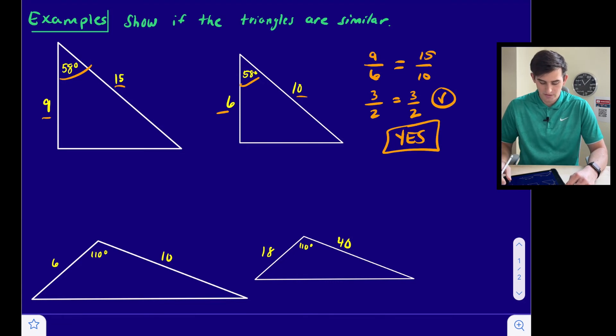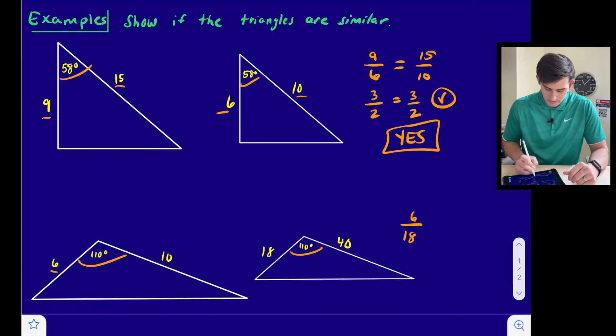The next two triangles have this included angle of 110 degrees, so they have a congruent angle. Now let's look at the corresponding sides. Let's do 6 over 18, comparing these two sides, and 10 over 40, comparing these two sides.